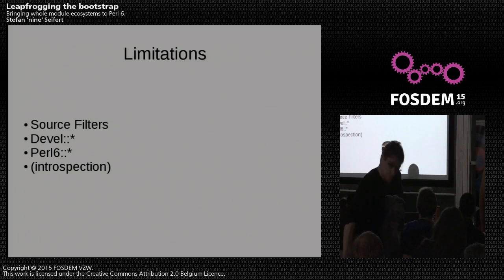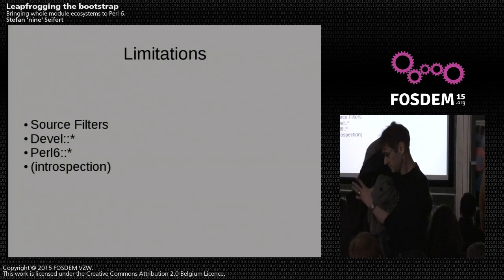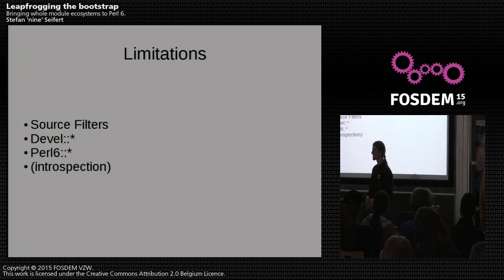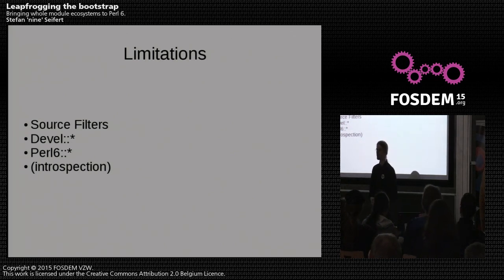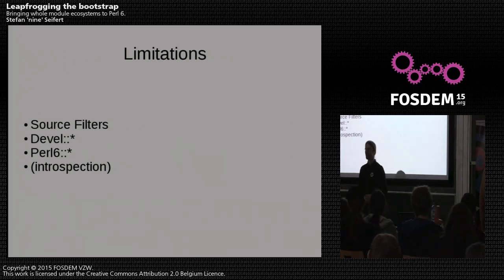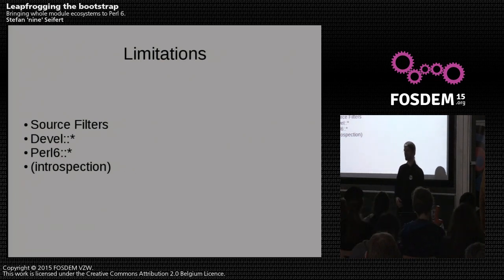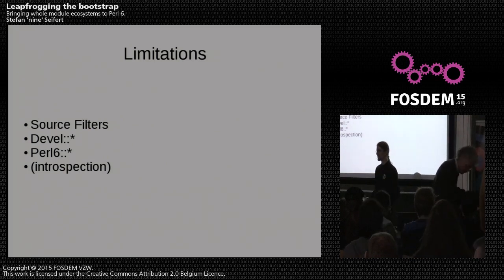I've shown you a lot of things that work in Inline::Perl5, so let's talk about what does not work. Obviously, source filters written in Perl 5 would be highly surprised by finding Perl 6 code, so those are out of the question. Probably everything in the Devel namespace is a bit too low-level to be of any use in a Perl 6 program, and of course everything in the Perl6 namespace is kind of obsolete when you have the real Perl 6.